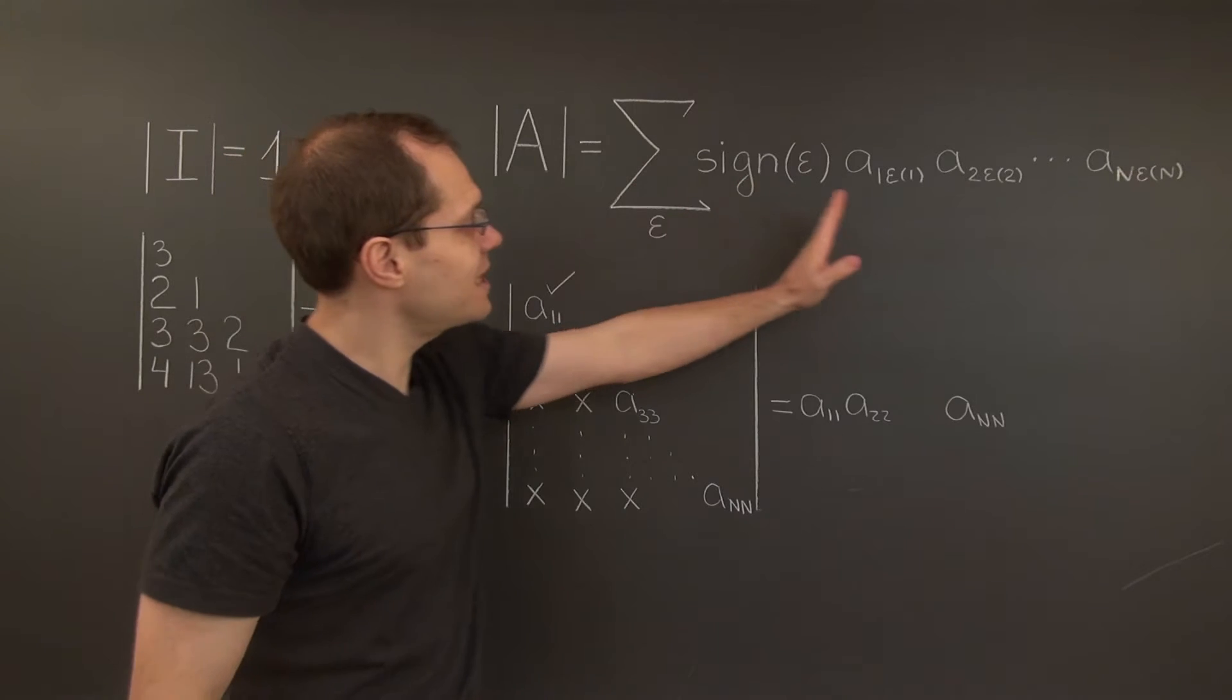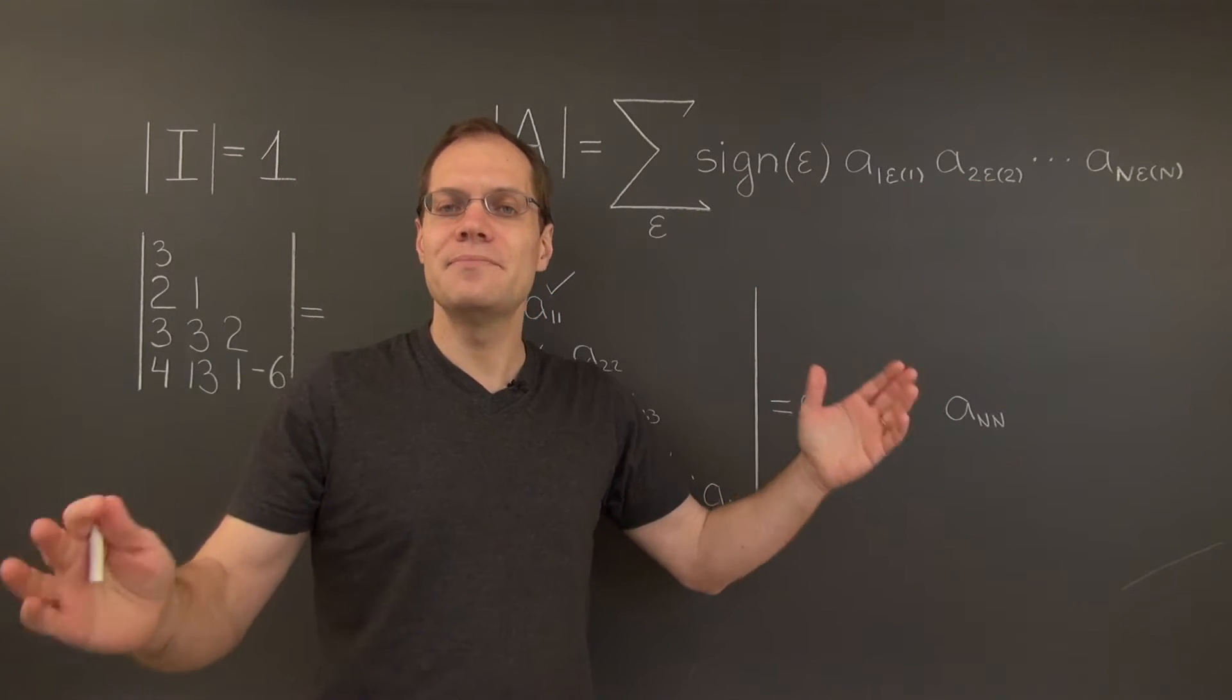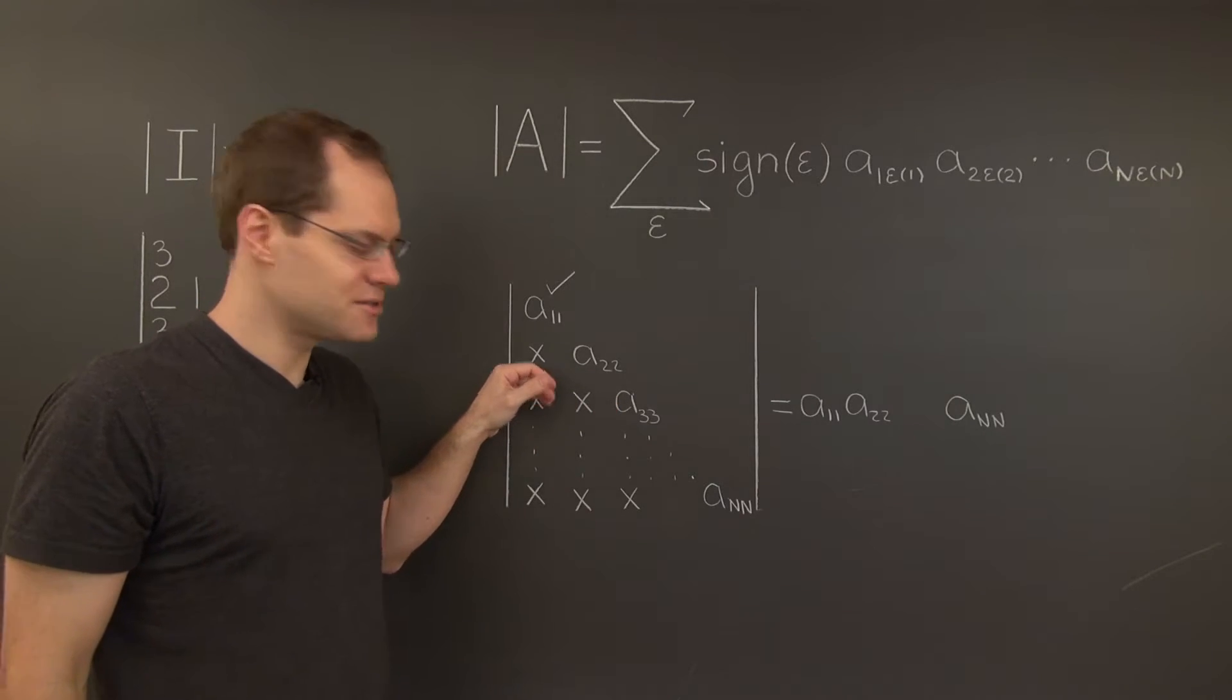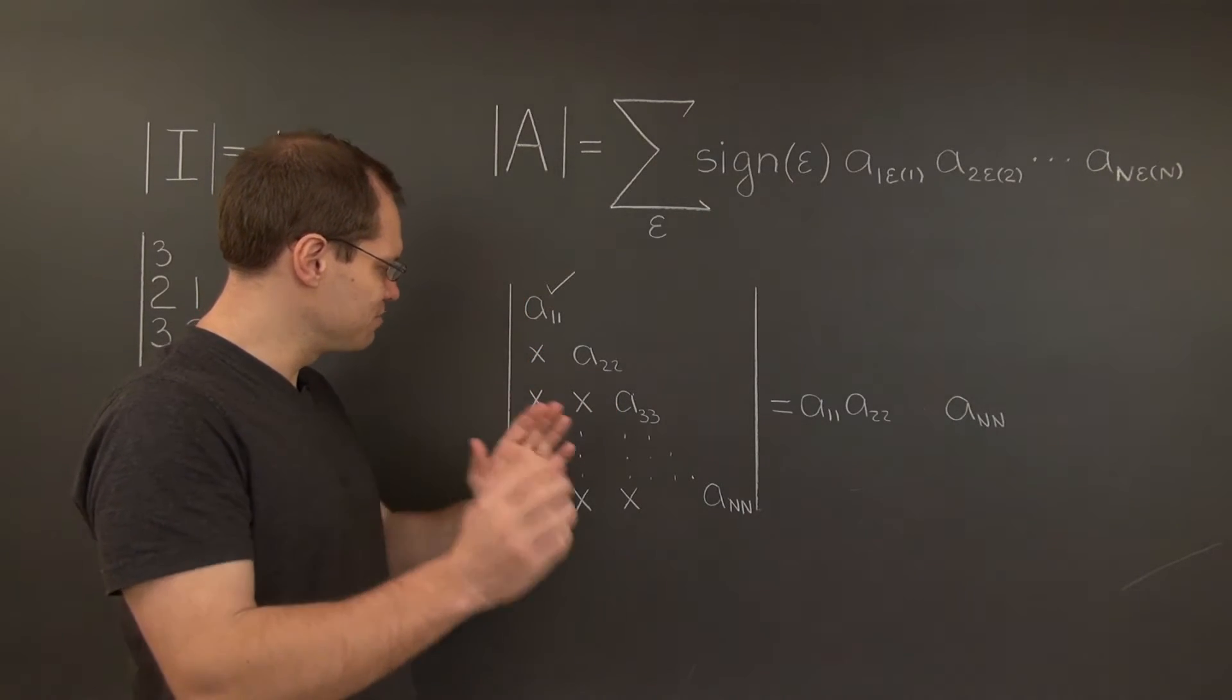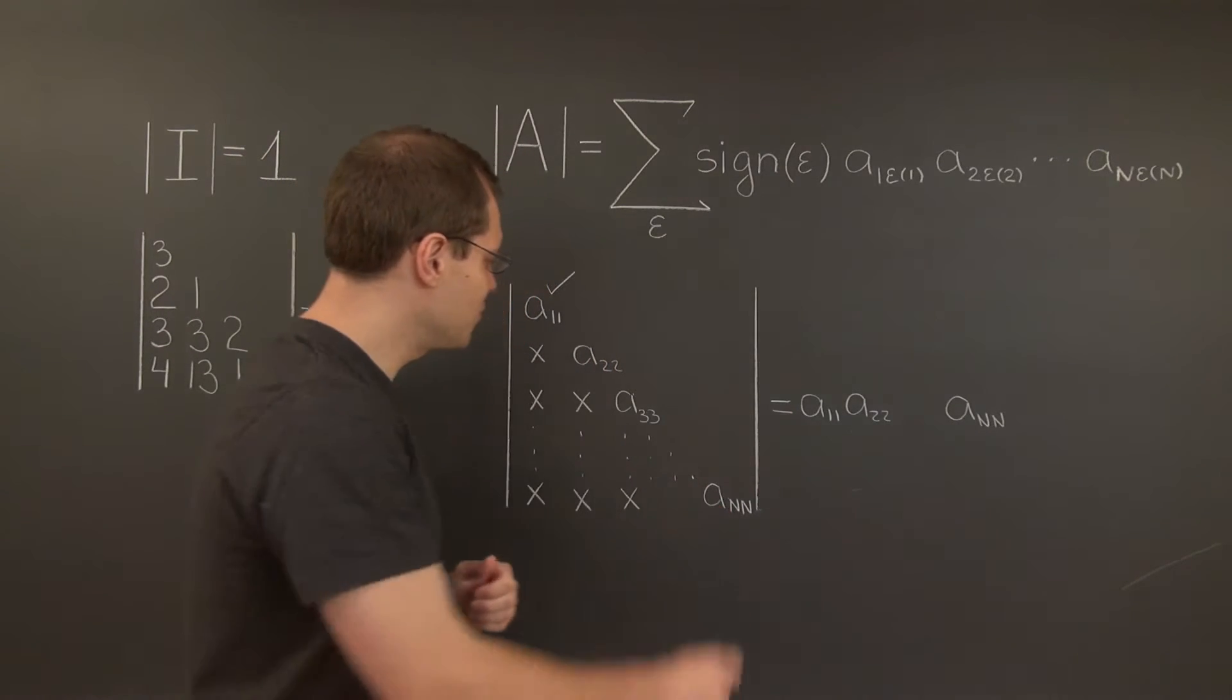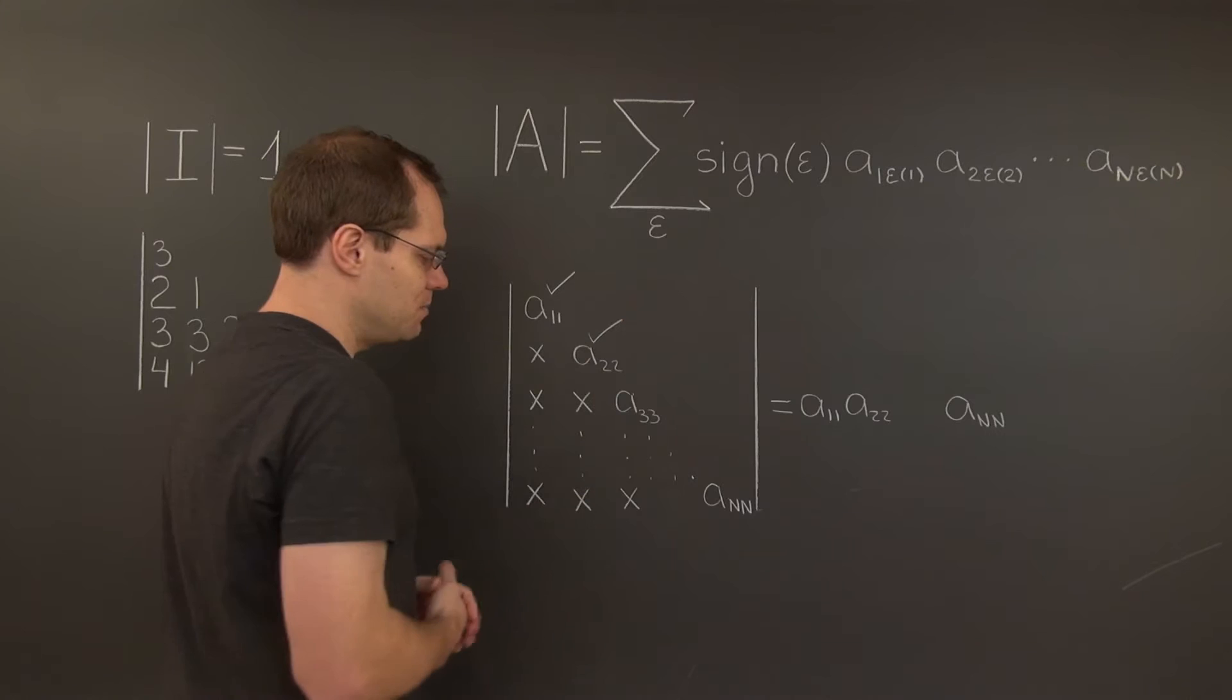What about the second row? Well, in the second row, they must utilize a22, because this one is out, the first column has already been spoken for, and the remaining entries are zero, so a22 must be part of it.